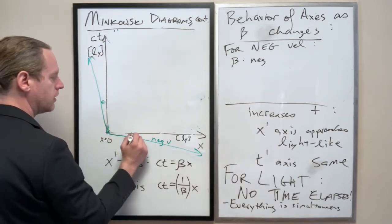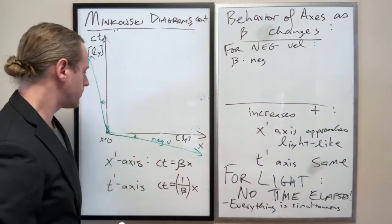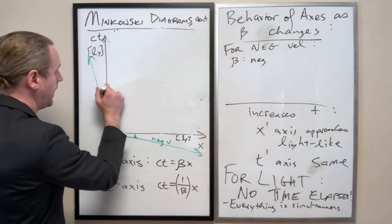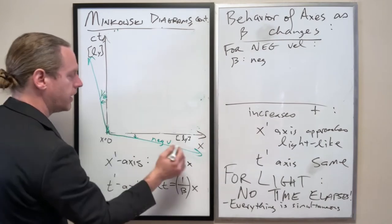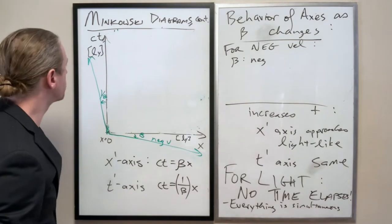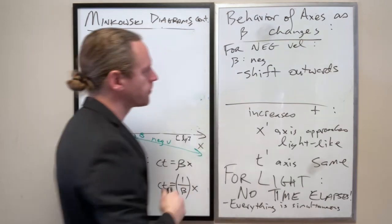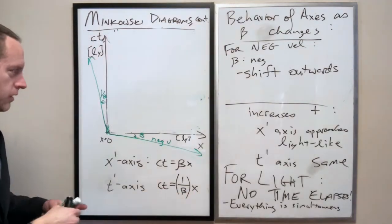So again, negative, they shift outwards. And positive, they shift inwards. And the angle, again, 1 over beta and beta. Or the slope, more specifically.